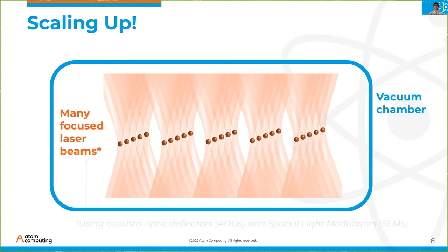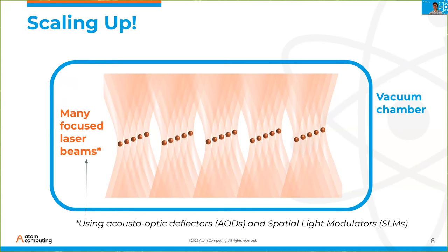Option one is an acousto-optic deflector, or AOD, and option two is a spatial light modulator, or SLM. For the AOD, I send light through it and image it at the plane of the atoms. By applying individual RF tones with different frequencies to the AOD, I can map each RF tone to the location of each spot — a very programmable approach. For the spatial light modulator, I take the SLM chip, bounce light off it, and image that light onto the plane of the atoms. Each pixel on the chip can be programmed with a slightly different phase shift, creating a spatial phase profile, which allows me to create arbitrary patterns of light, such as the spot arrays seen in the diagram.